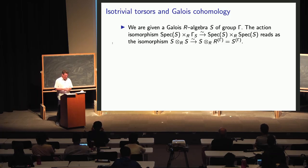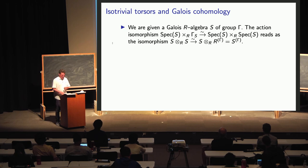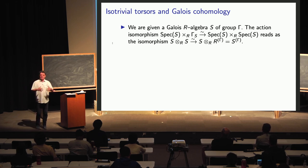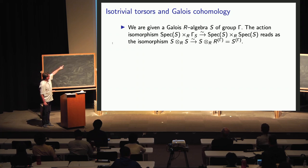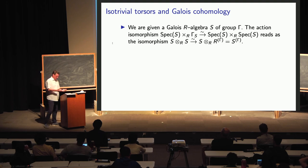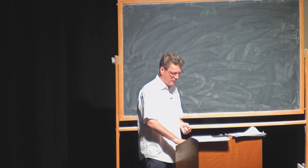It is convenient to take the ideal situation of a Galois algebra S with group Γ. When you look at torsors split by this S, you enter the world of Galois cohomology. What I am saying is that when you do S⊗_R S with S^Γ coming from the general theory, you are actually recovering the Galois cohomology definitions.